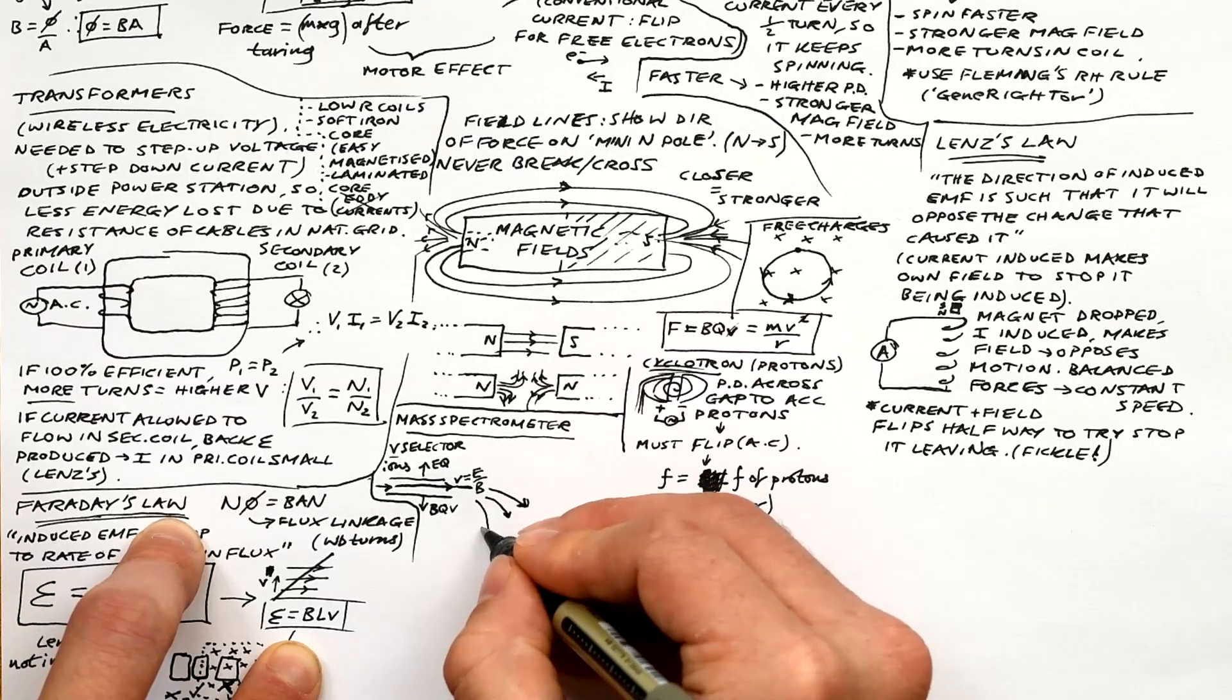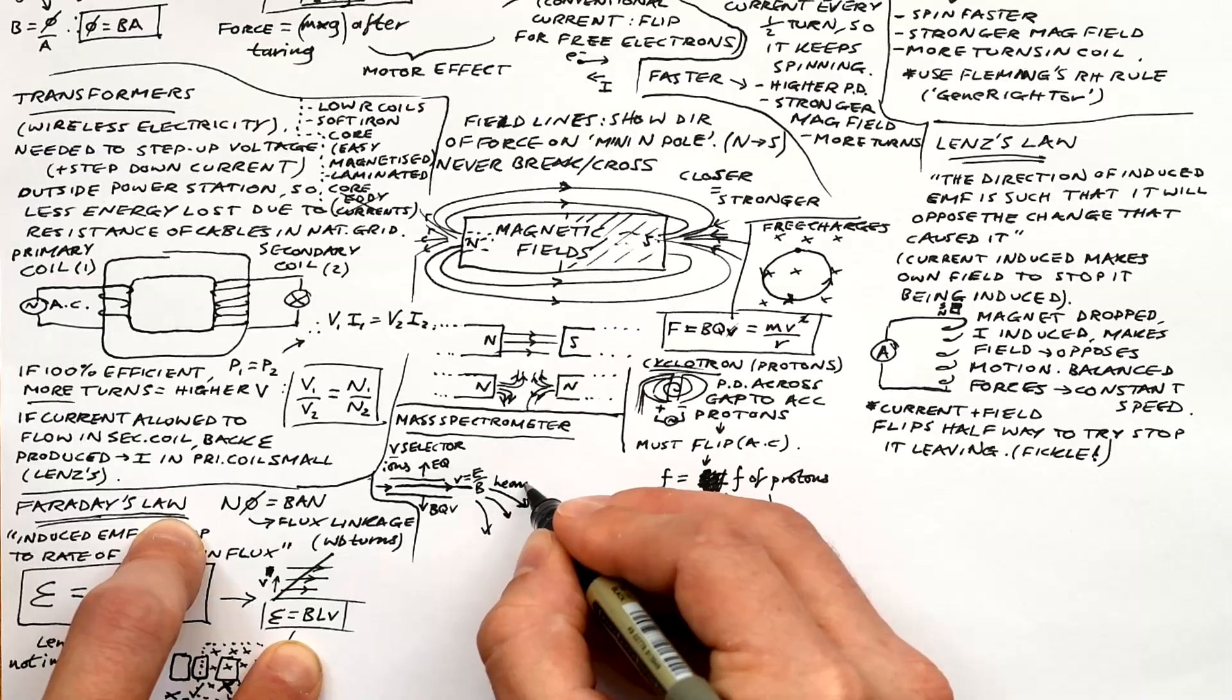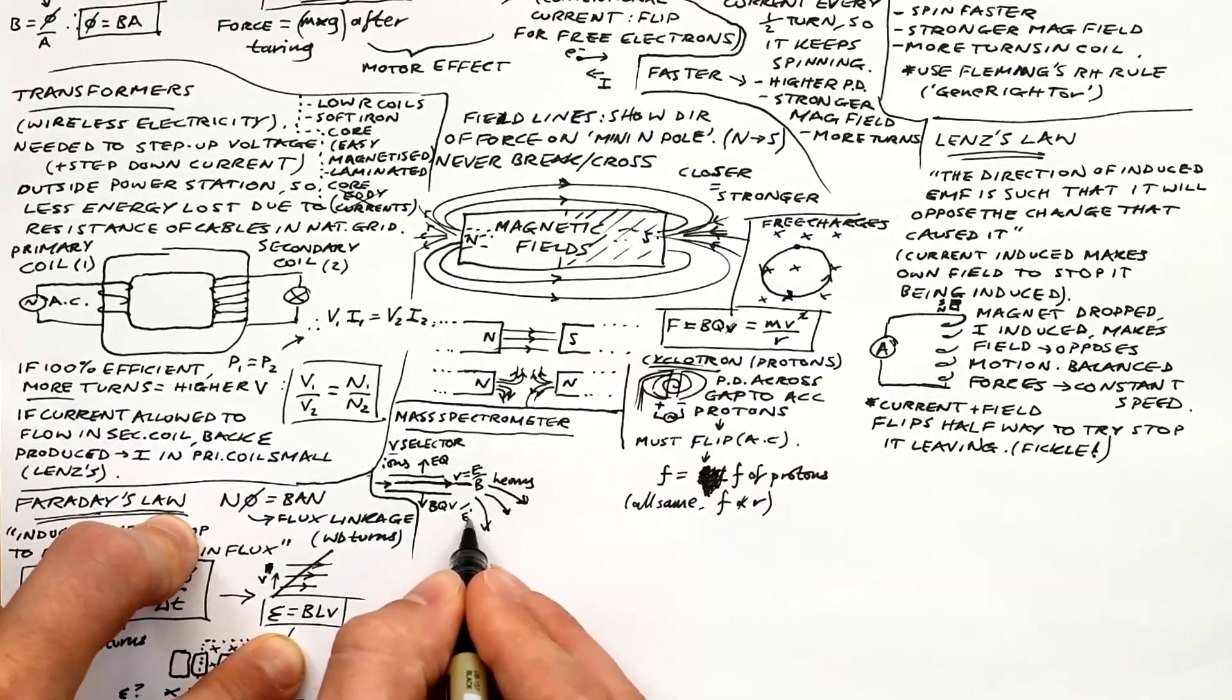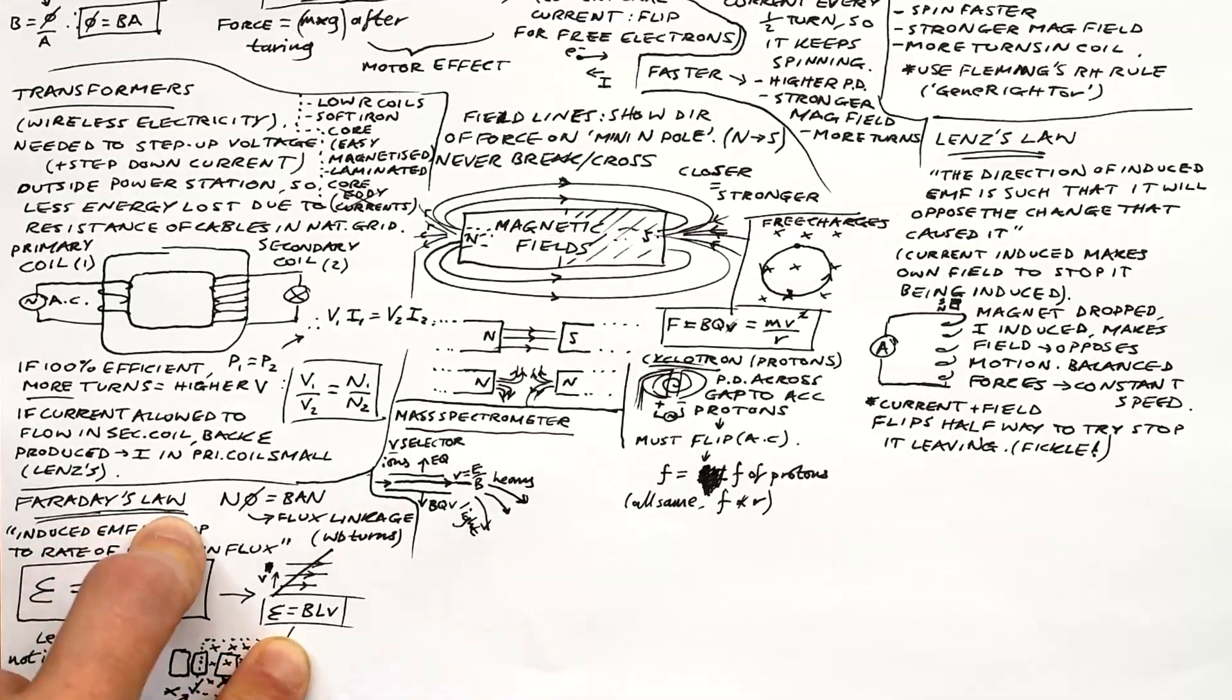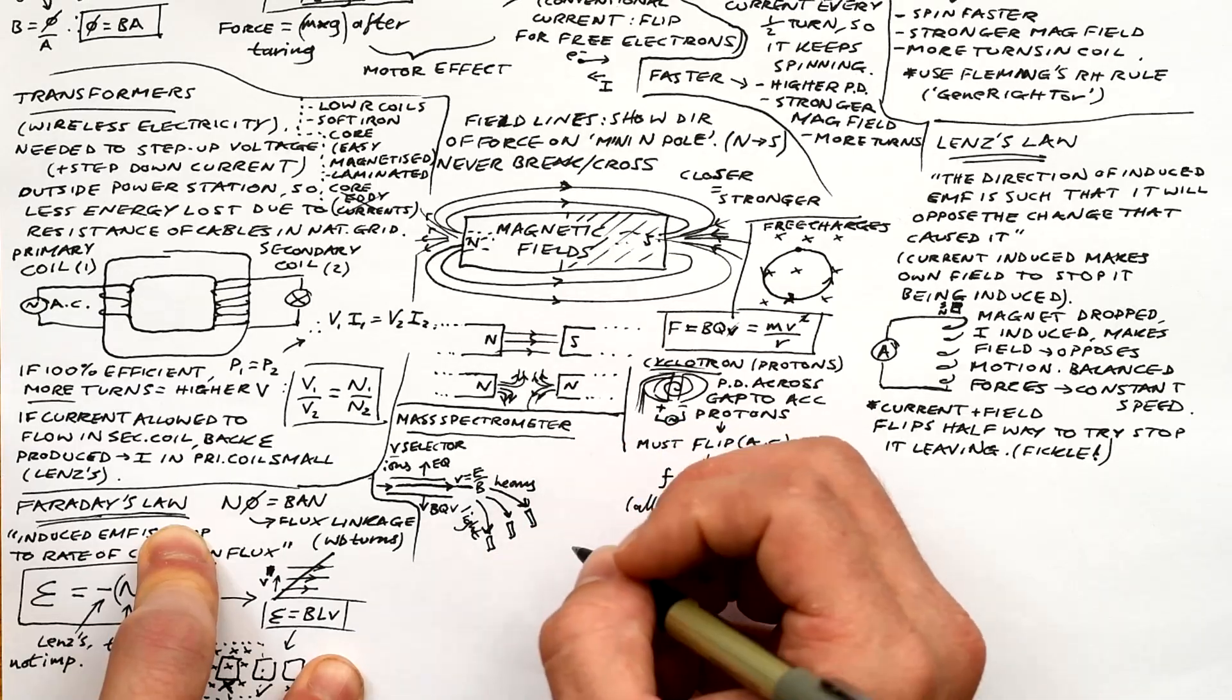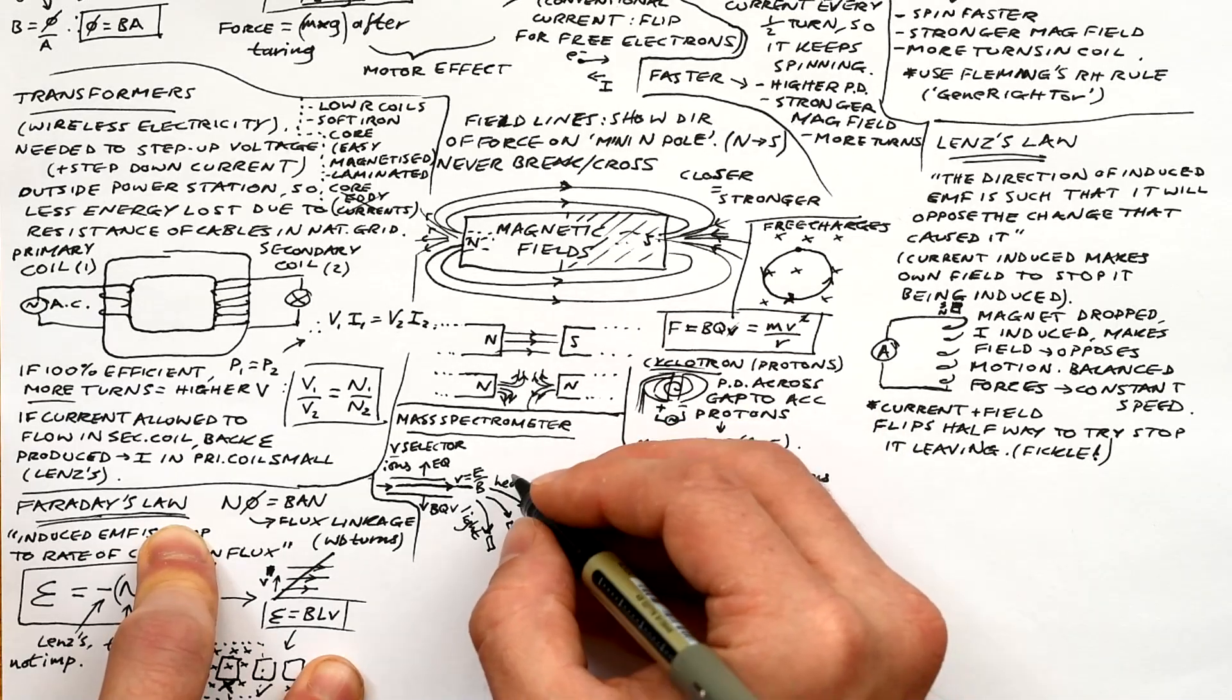Once through, they go into another magnetic field. Lighter ions get deflected more from the equation we just saw. Radius is proportional to mass. So we have sensors at these particular positions where they end up. We can tell how many ions we have relative to the other ones. We can use this to find a relative abundance of isotopes, for instance.